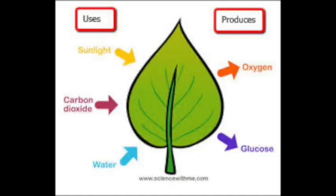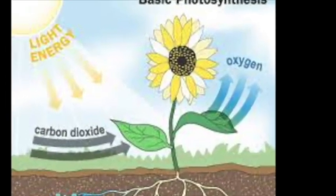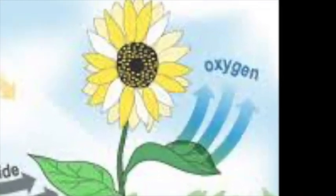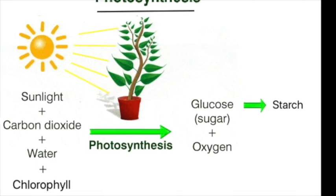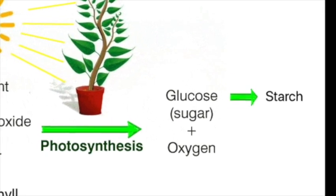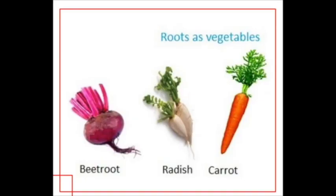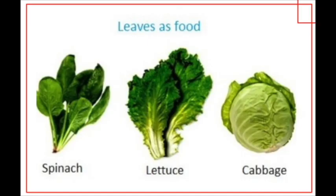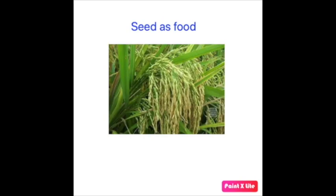With the help of all these elements — water, carbon dioxide, sunlight, and chlorophyll — plants make their food in leaves. The product of photosynthesis is glucose. And during photosynthesis, oxygen is also produced. This oxygen is released to the atmosphere through the small pores present in the leaves. The glucose formed in photosynthesis is later converted into starch and stored in different parts like roots, stem, leaves, flowers, fruits, and seeds.